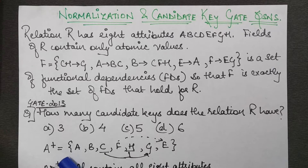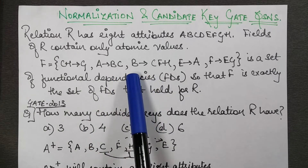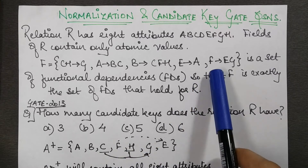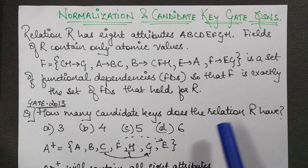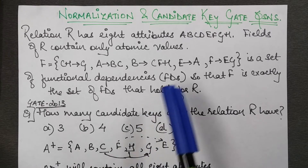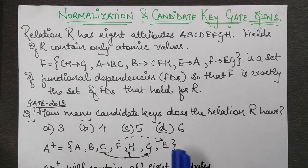Starting with attribute A: the closure of A gives us A (trivially), then from A→BC we get B and C. From B→CFH we get C, F, and H. From F→EG we get E and G. Counting these attributes: A, B, C, F, H, E, G — that is seven attributes, but D is missing.